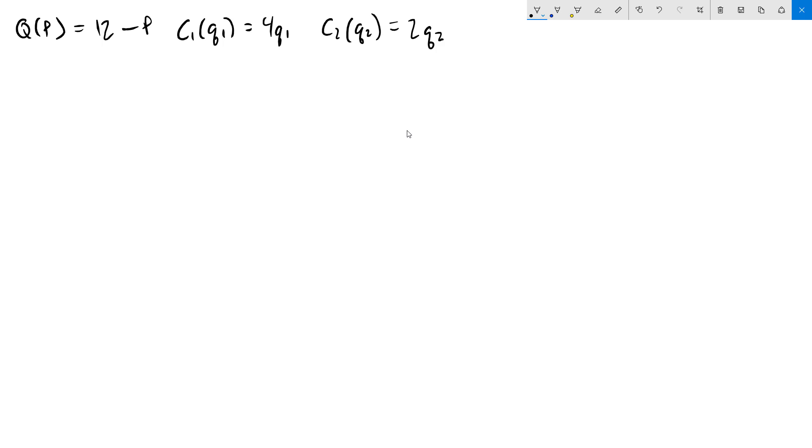That means we're going to have to solve our demand function for p and turn it into an inverse demand function. This is a relatively simple demand function, where all we need to do is add p to both sides and subtract q from both sides and then we get p of q equals 12 minus q. Big Q is the total market quantity, which is going to be the sum of the individual firm's quantity. So we're going to have big Q equals q1 plus q2. So we're going to substitute that in.